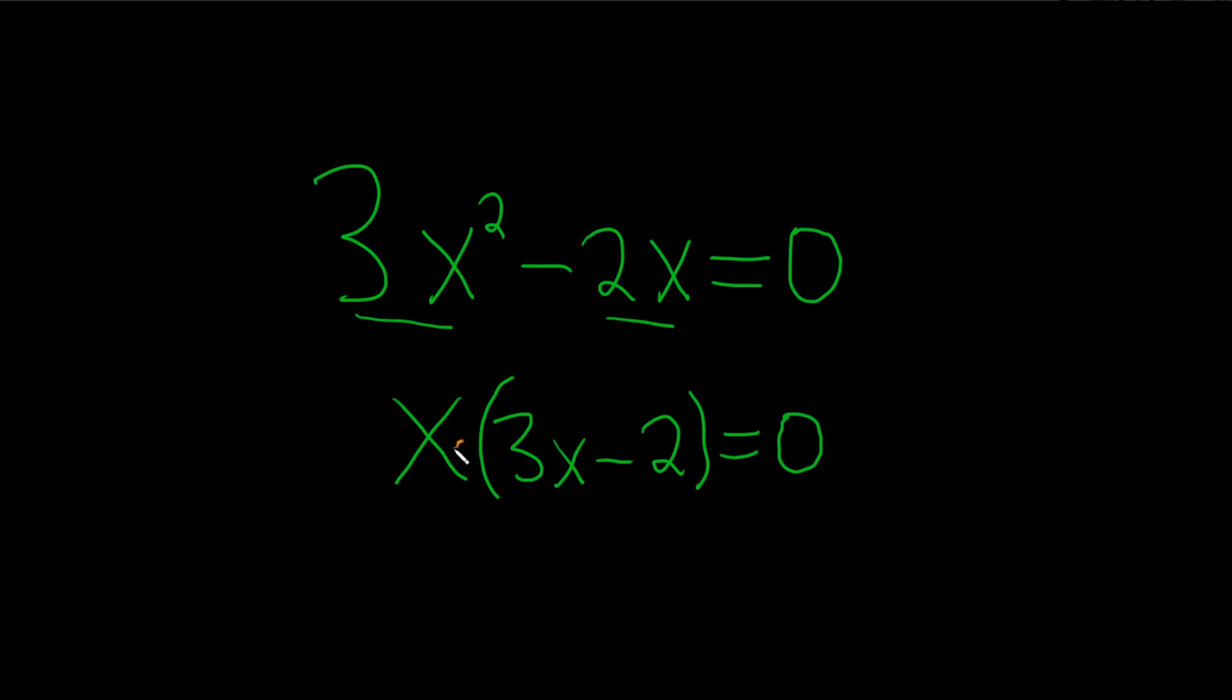Whenever you have a product equal to 0, you just set each factor equal to 0. So we have x equals 0, and 3x minus 2 equals 0.